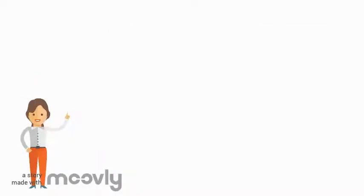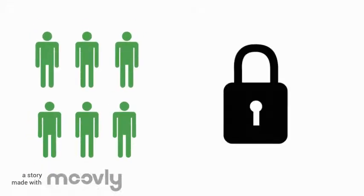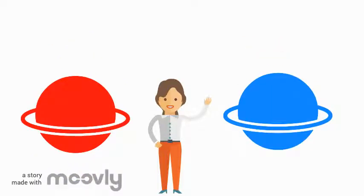Siding Spring Observatory is located on the edge of Warram Bungal National Park in New South Wales. It is one of Australia's most well-known protected observatories. Light pollution prevents stars and other foreign objects from appearing in the night sky.